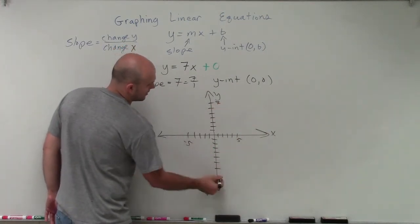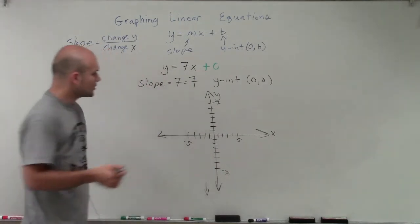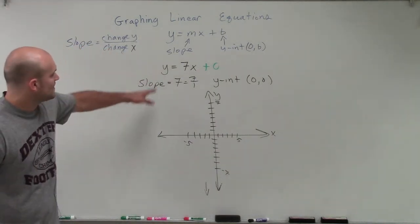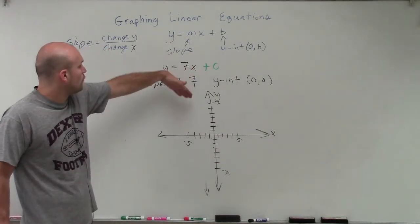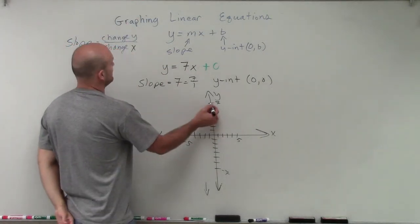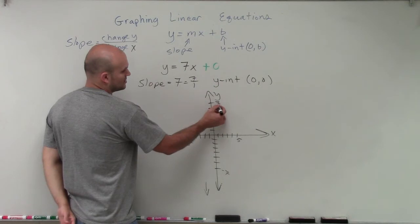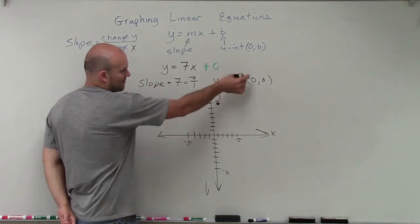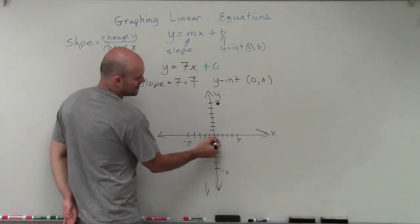And you just need to adjust how your graph is going to be looking. So my slope is positive 7 over 1. That means my change in y is 7, so I'm going to go up 7. And my change of x is positive 1, so I'm going to go over 1. I'm sorry, I forgot to graph my initial y-intercept, which is at 0, 0.